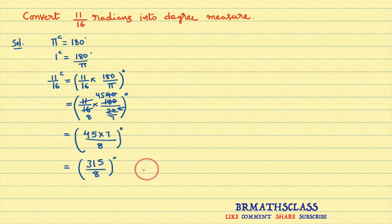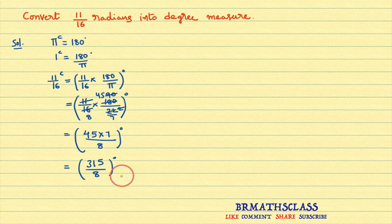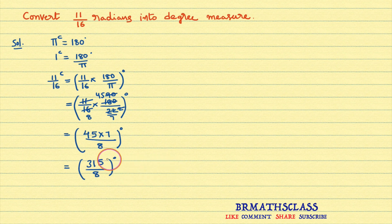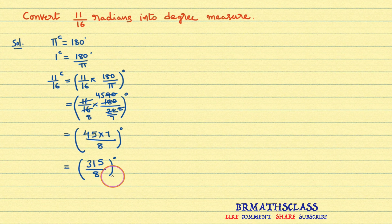Till now all the students will feel easy to get the things. From here onwards, what we do is a little difficult — try to understand clearly. We know that in degree measure, the angle is divided into degrees, and further it can be divided into minutes and seconds. Now I need to write this degree measure into minutes as well as seconds. Many students feel difficult in that part — but it is very simple. You divide 315 by 8 like this.